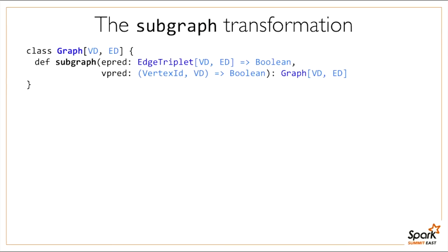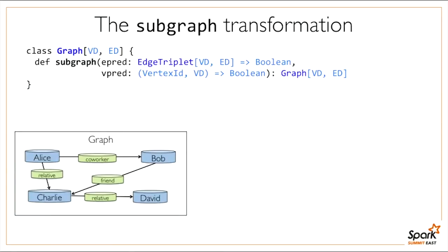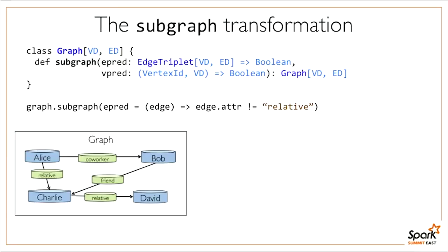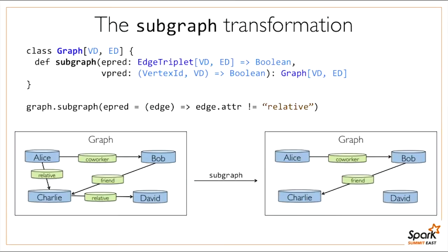The second operation is subgraph, which filters the graph according to an edge predicate or a vertex predicate. We'll use a more interesting version of the graph that has one extra person, David, and some new edge types including 'relative'—Alice is Charlie's relative, and Charlie is David's relative. If we give subgraph an edge predicate to filter out the relative relationships, the edges with 'relative' are gone. David is still there though, because we haven't said to filter out that vertex.